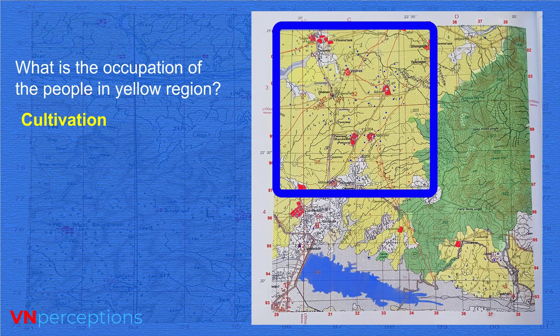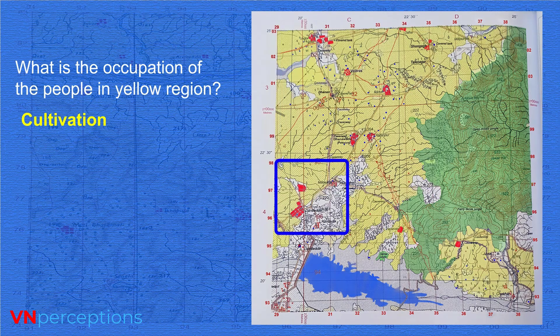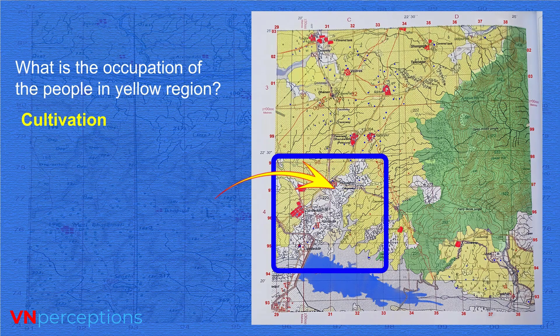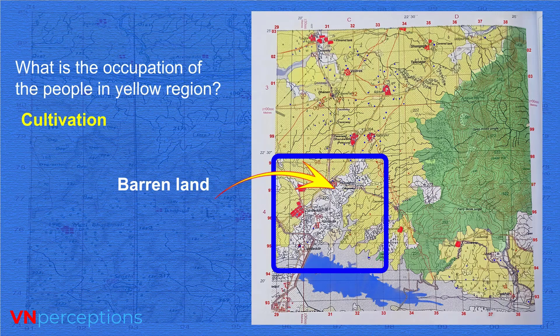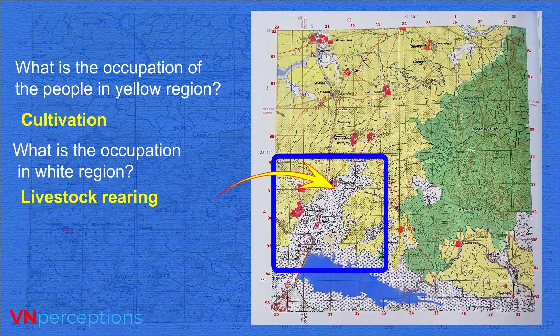Similarly, there are white wash areas — white color areas. These are uncultivated land or barren lands. Here the main occupation is livestock rearing.